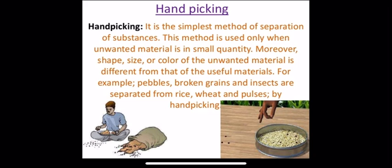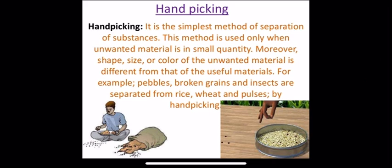Handpicking is the simplest method of separation of substances. This method is used only when unwanted material is in small quantity. Moreover, the shape, size or color of the unwanted material is different from that of the useful material.